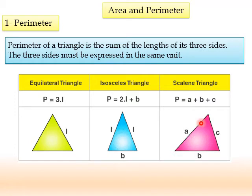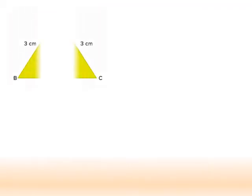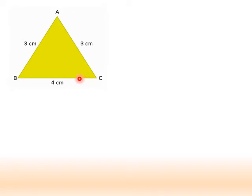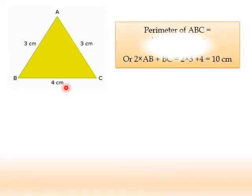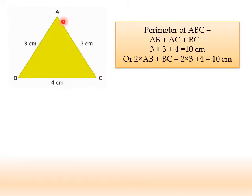We have to calculate the perimeter of triangle ABC, given that AB equals 3 cm, AC equals 3 cm, and BC equals 4 cm. First, we check the unit — all three sides have the same unit, so we can add them. The perimeter is AB plus BC plus CA, which equals 3 plus 4 plus 3, giving 10 cm.